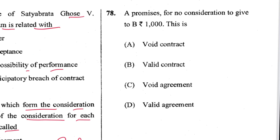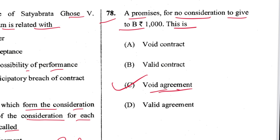Question 78: A promises for no consideration to give B rupees 1,000 — this is a void agreement. An agreement without consideration is void ab initio. C is the answer. This is an illustration in Section 25 of the Contract Act.